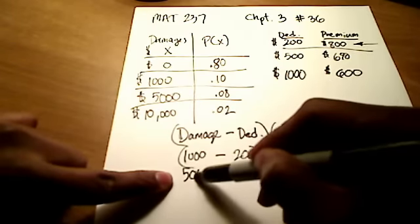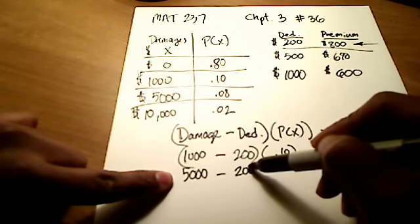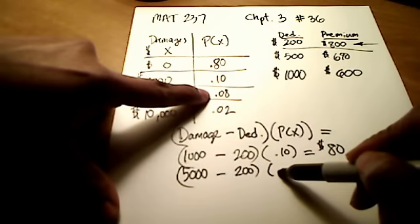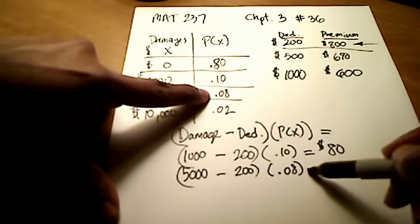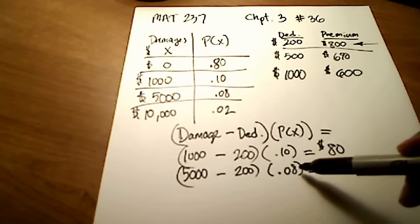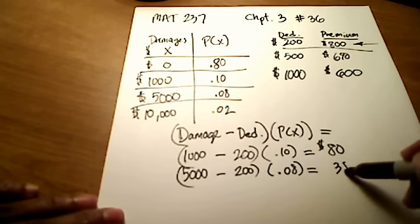Let's see. If we had a $5,000 accident minus my deductible of 200, and the probability of a $5,000 accident occurring is 8%. That would give me, let's see, $4,800 times 0.08, let's see, a total of $384.